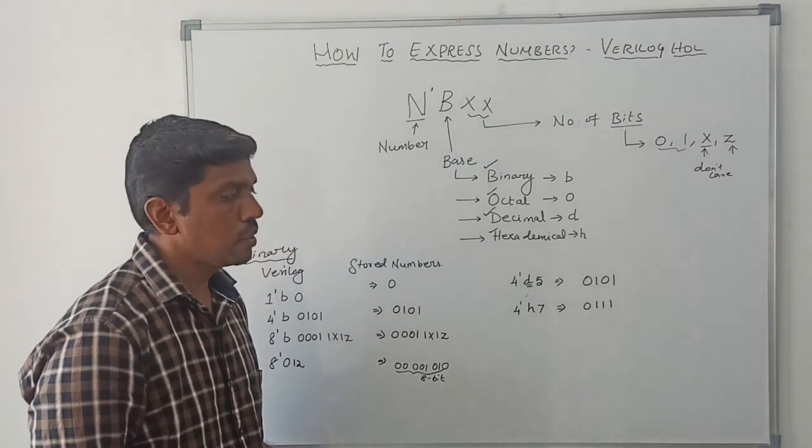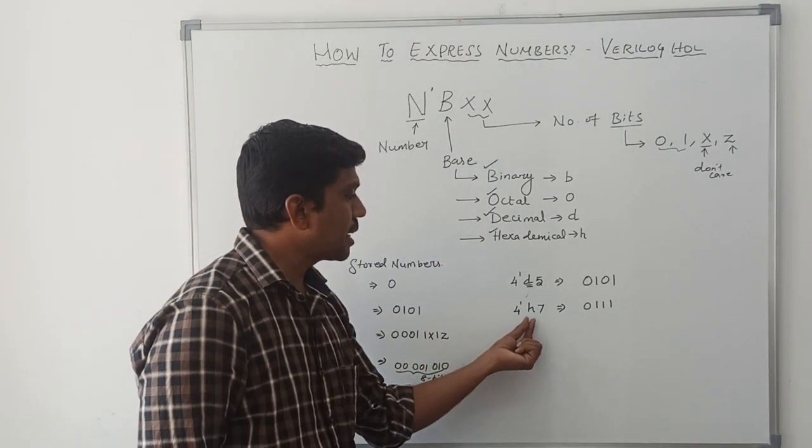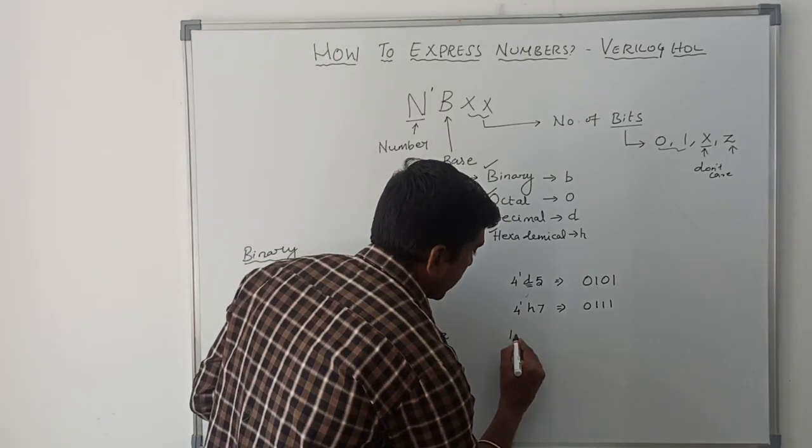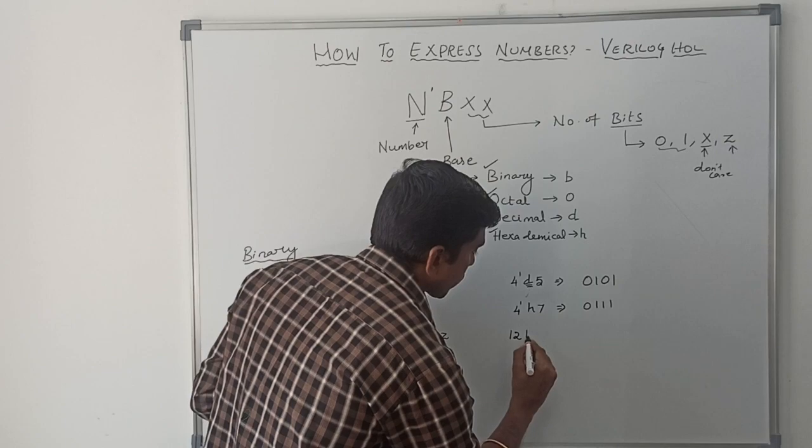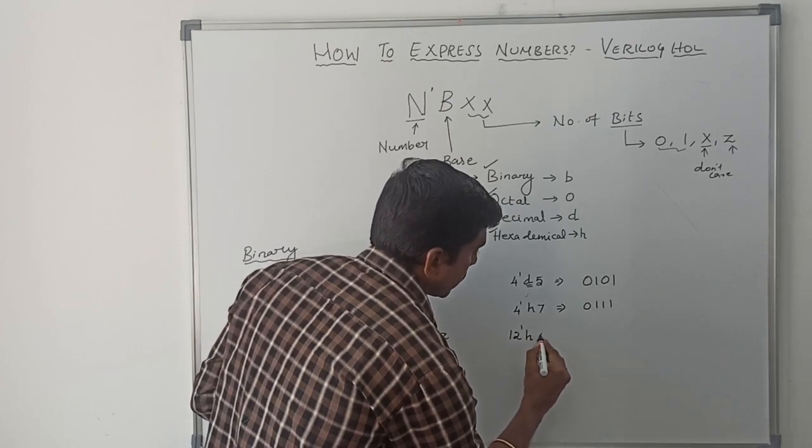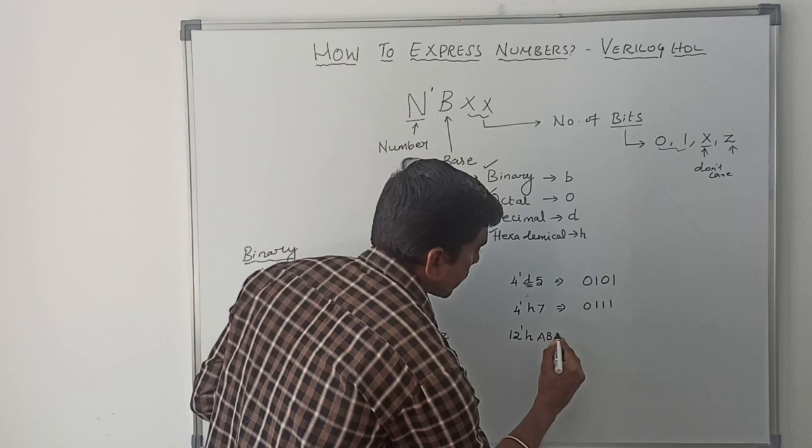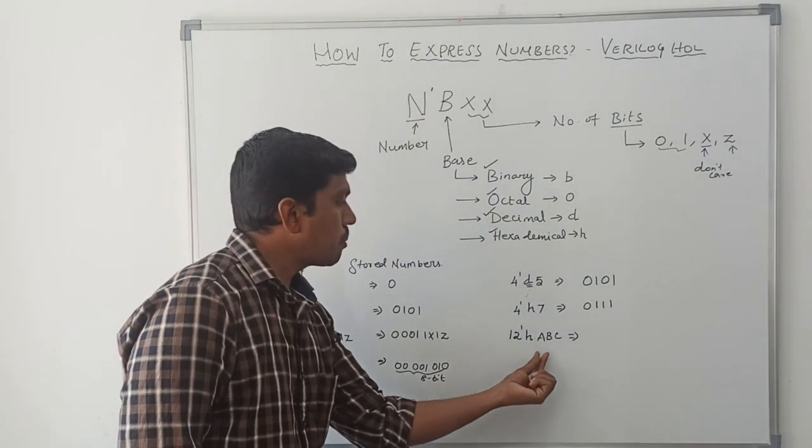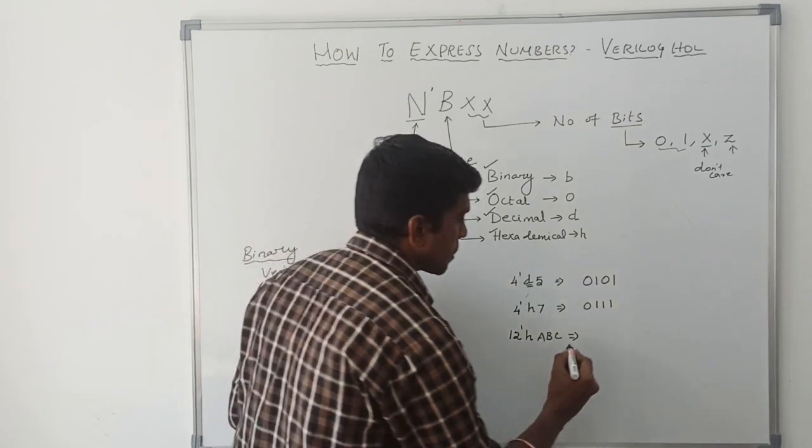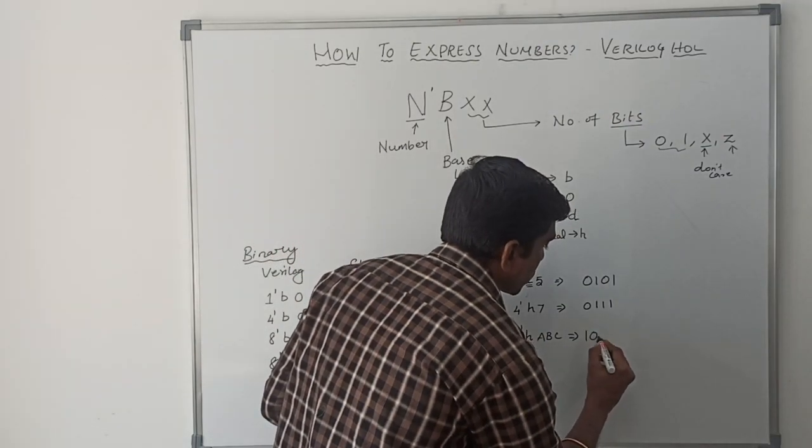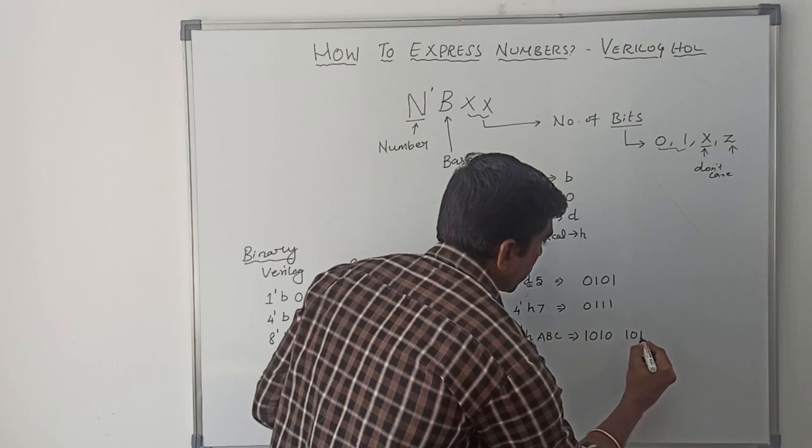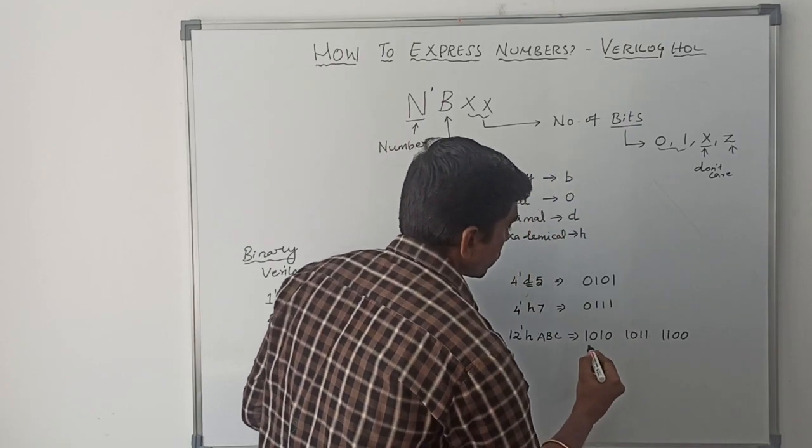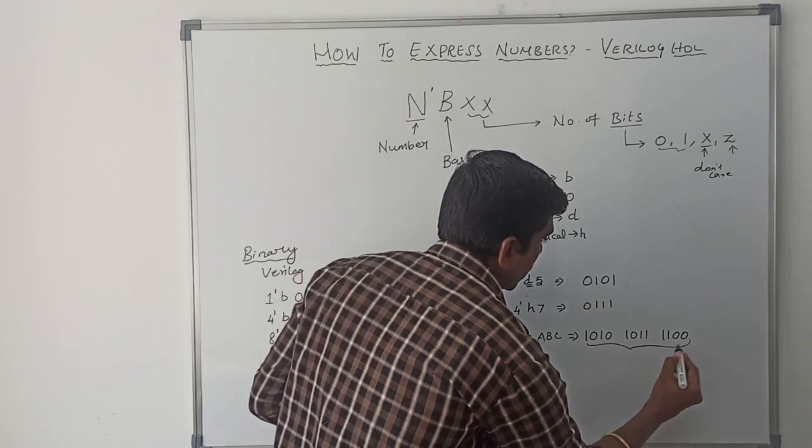Suppose I need to express the hexadecimal number in 12 bit. Let me write here 12 tick h. Then I mentioned the hexadecimal value A, B, C. The stored number for this A, B, C is A value 1010. B is 1011, C value 1100. It's totally 12 bit.